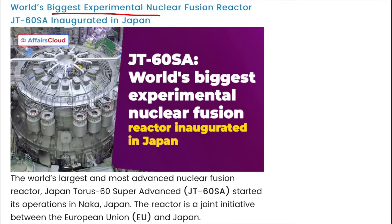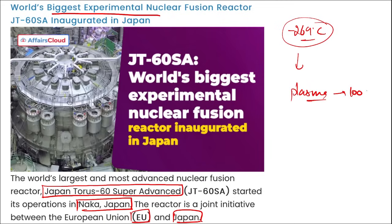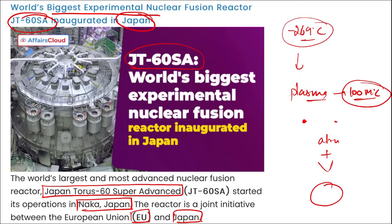World के biggest experimental nuclear fusion reactor की बात कर रहे हैं जिसका नाम है JT-60SA — Japan Taurus 60 Super Advanced। यह world का largest and most advanced nuclear fusion reactor है, located in Naka, Japan। इसने अपना operation start किया। यह joint initiative है between European Union and Japan — 2007 में joint agreement हुआ था। यह super conducting coils use करेगा जो cool होती हैं approximately -269 degree Celsius तक, and the plasma temperature can reach up to 100 million degree Celsius। Nuclear fusion तब होता है जब दो lighter atoms को combine करके एक single heavier atom बनाया जाता है।